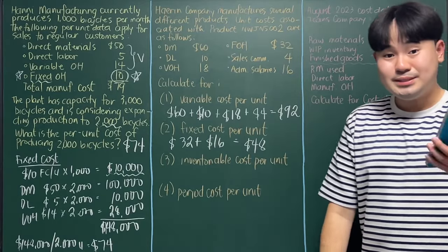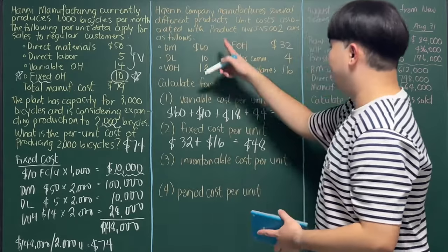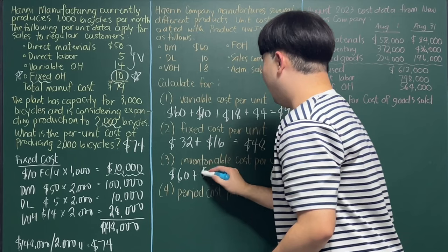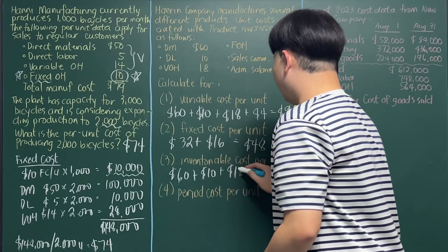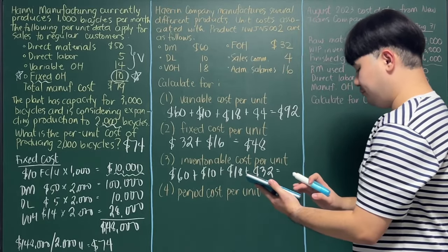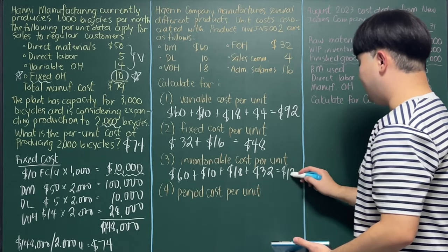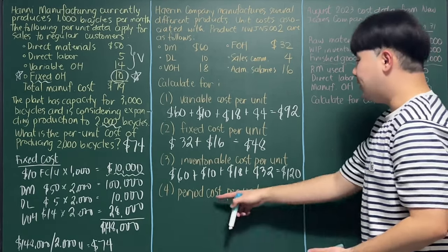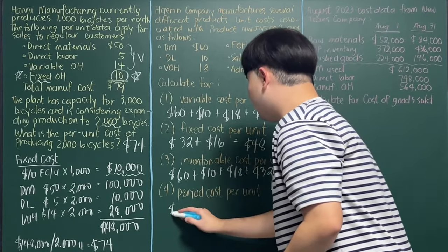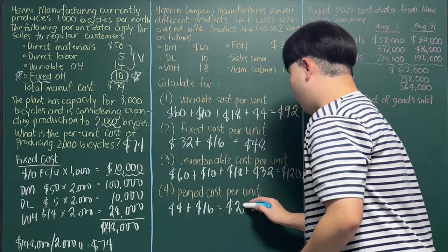Inventorial cost per unit — also known as product cost per unit — includes: materials $60,000, labor $10,000, variable overhead $18,000, and fixed overhead $32,000, totaling $120,000. Lastly, for period cost — basically your operating expenses — that's sales commission $4,000 and administrative salaries $16,000, which totals $20,000.